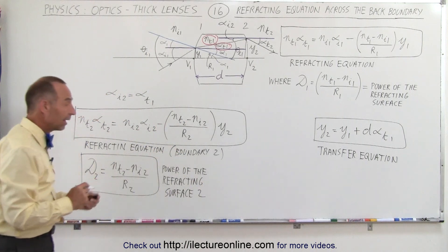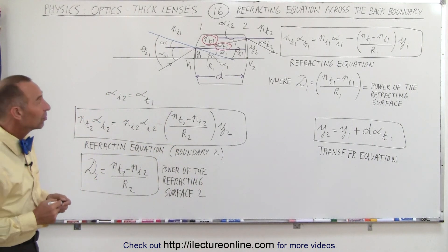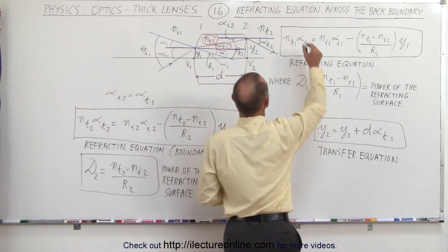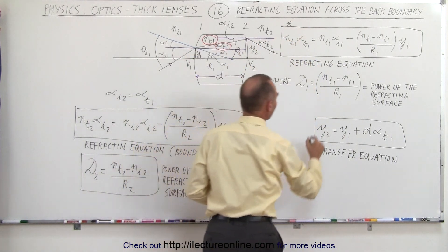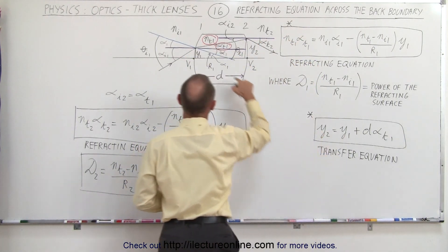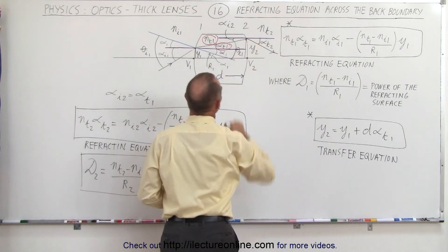There we go. And so now we have all three equations. We have the first equation, right here, describing what happens across the first boundary. We have the second equation, the transfer equation, that describes what happens when the ray goes through the lens.